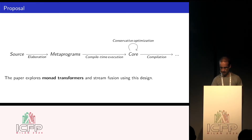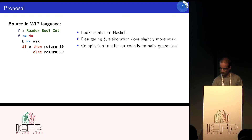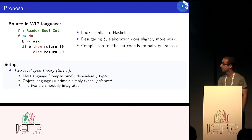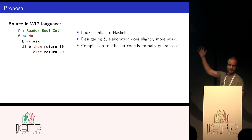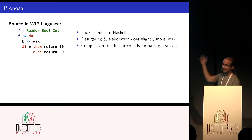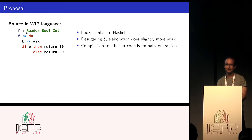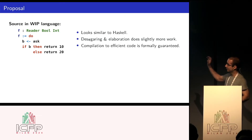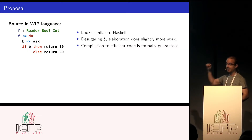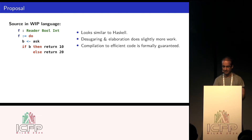Monad transformers are the thing I'm talking about in this talk mostly. There is this work-in-progress language, and the same code looks like this in this language - it looks very much like Haskell with some differences. For example, the single colon is very important as a difference. Then we do some desugaring on this source code, which does a bit more work than what happens in Haskell. But after that, the compilation to efficient code is actually formally guaranteed.